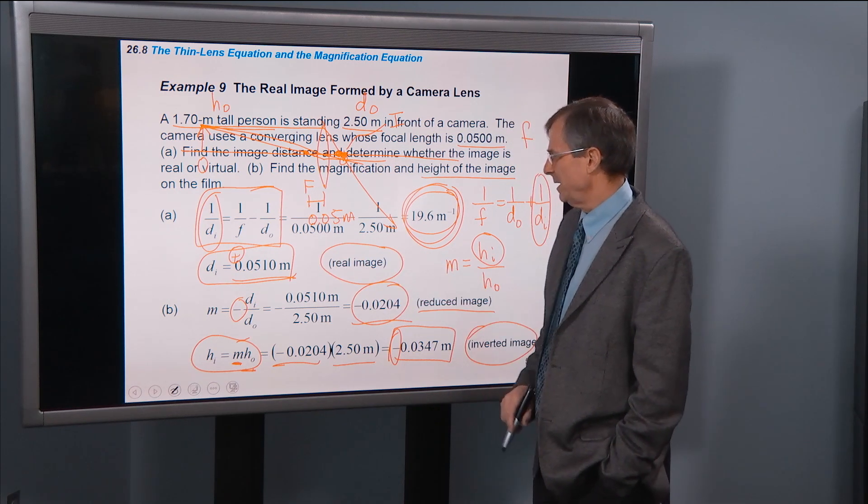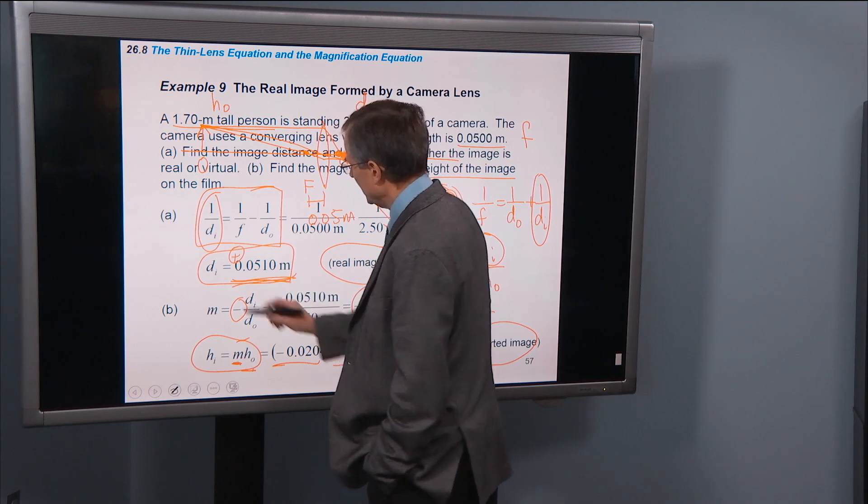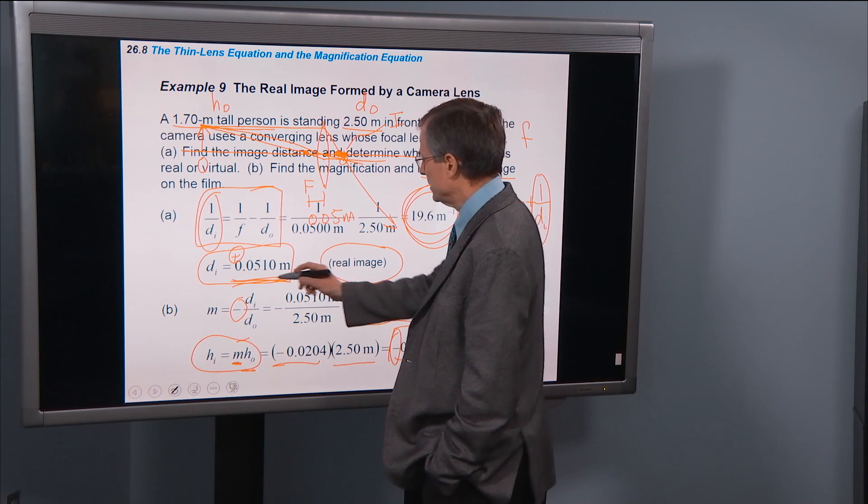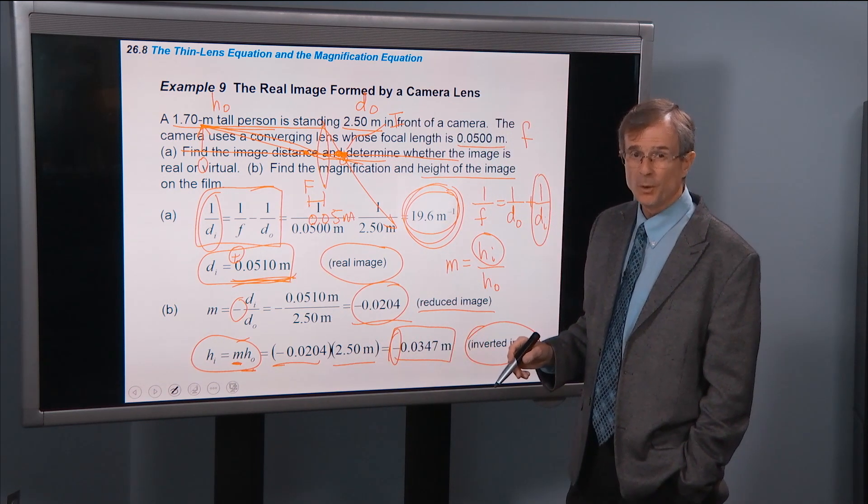So let's see if that squares with what we've found out. Is the image real? Yeah, sure enough it is. Is its distance pretty close to the lens? Yes, it is.